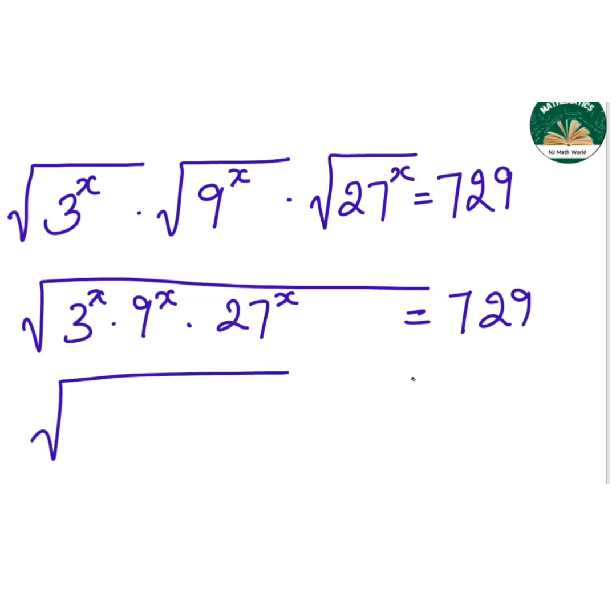Now we can write this as 3 to the power of x, 9 is 3 square, so it will be 3 square into x. 27 is 3 cube, so 3 to the power of 3x equals 729.